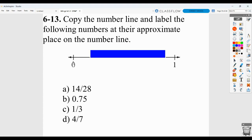Copy the number line and then label these in the appropriate place. 14 over 28ths is 1 half. So, it's going to be basically halfway. 75 hundredths is the same as 3 4ths. So, about there. 1 3rd is about here. And 4 7ths is a little bigger than 1 half.